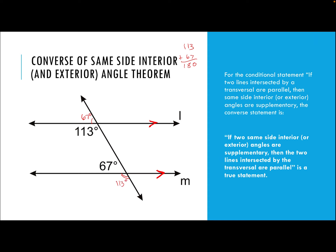The same side exterior angles are also supplementary, which means the two lines are parallel. So this converse theorem is: if two same side interior or exterior angles are supplementary, then the two lines intersected by the transversal are parallel. Our transversal is line T, and we have line L and line M. Because the same side interior angles and the same side exterior angles are supplementary, we know our lines are parallel.